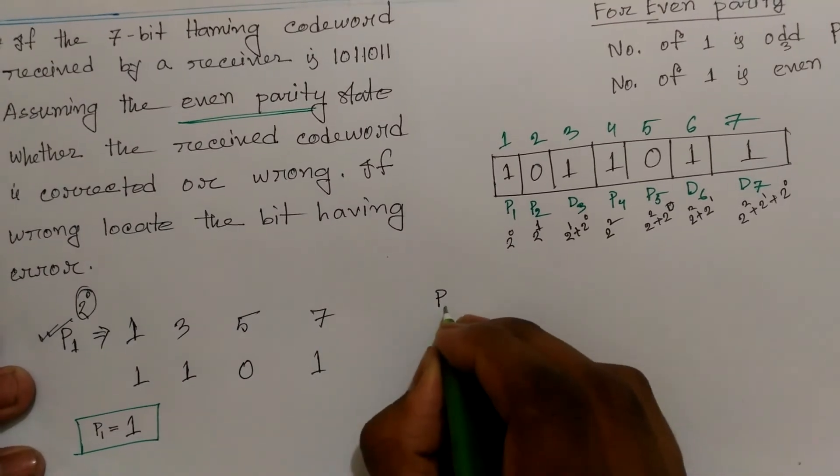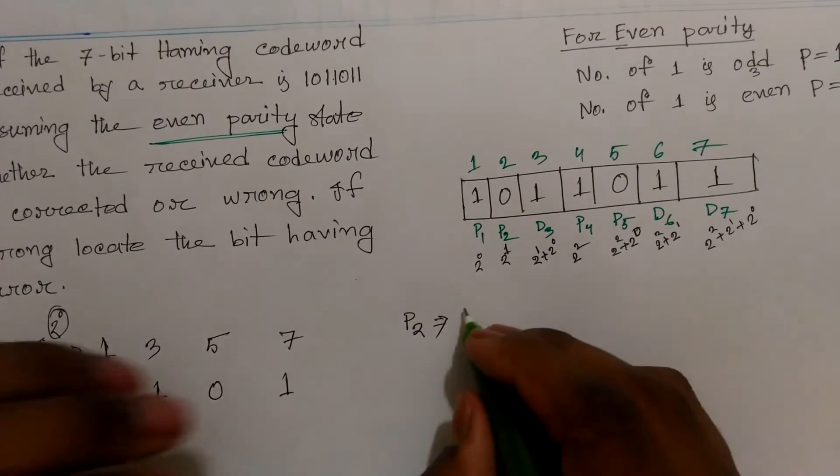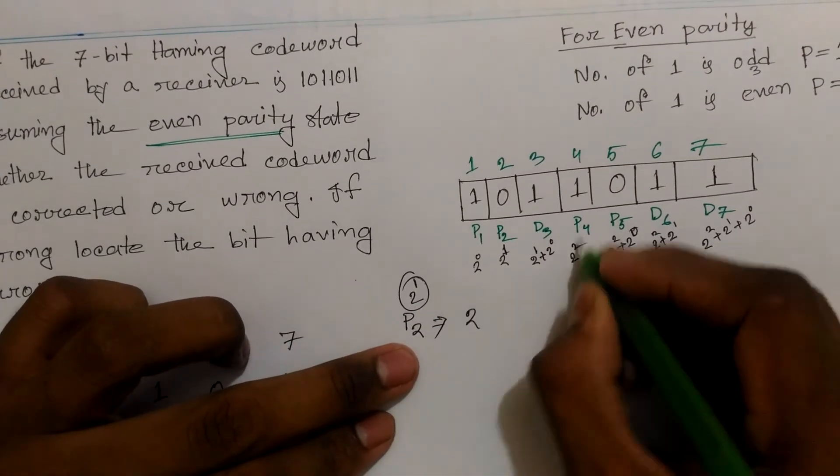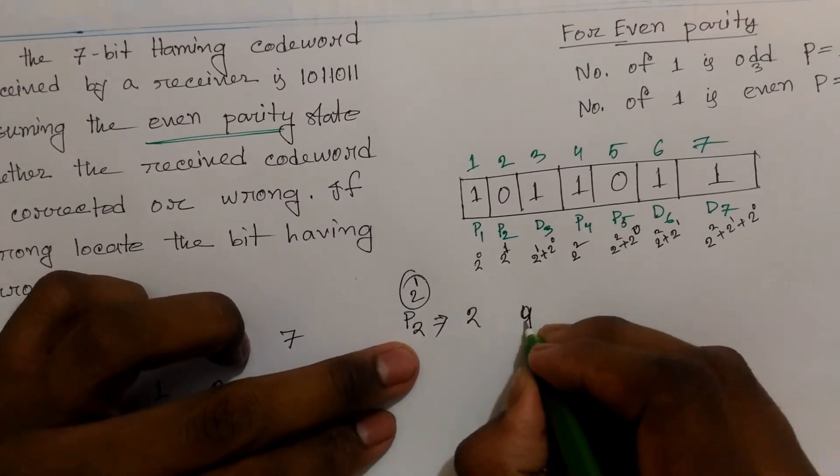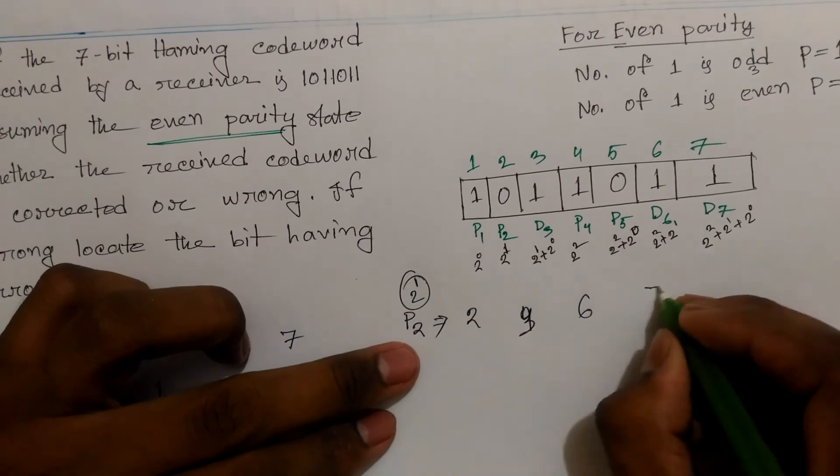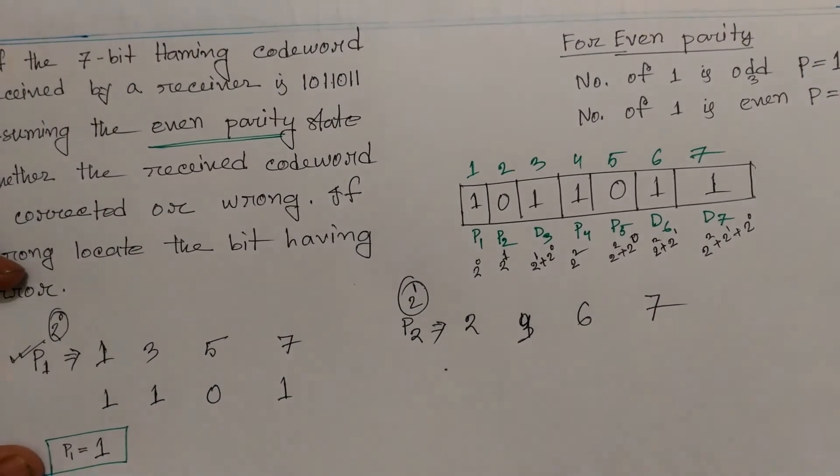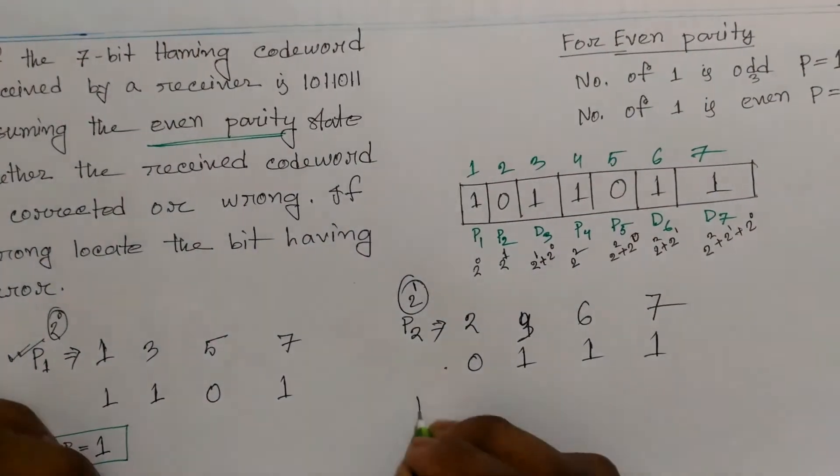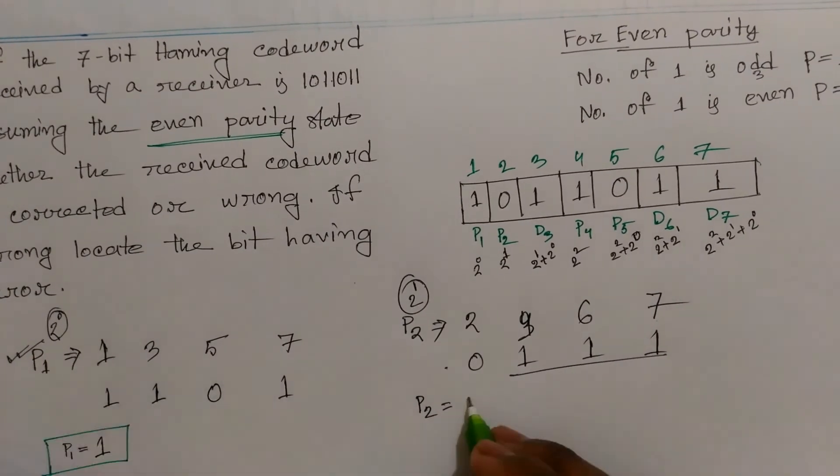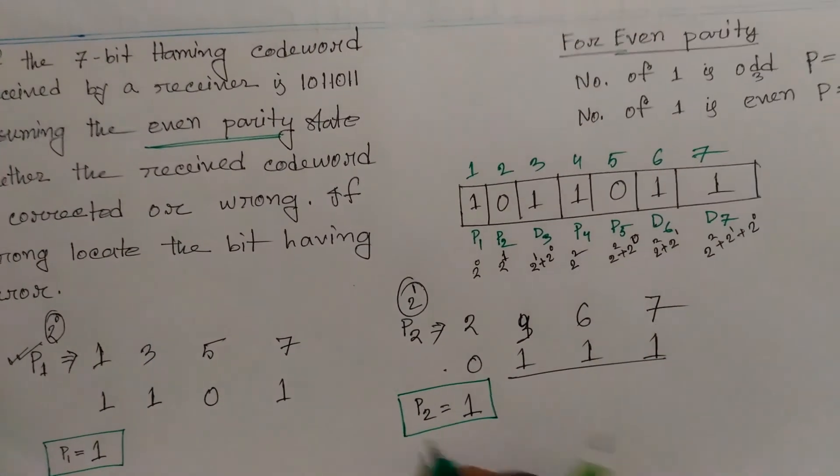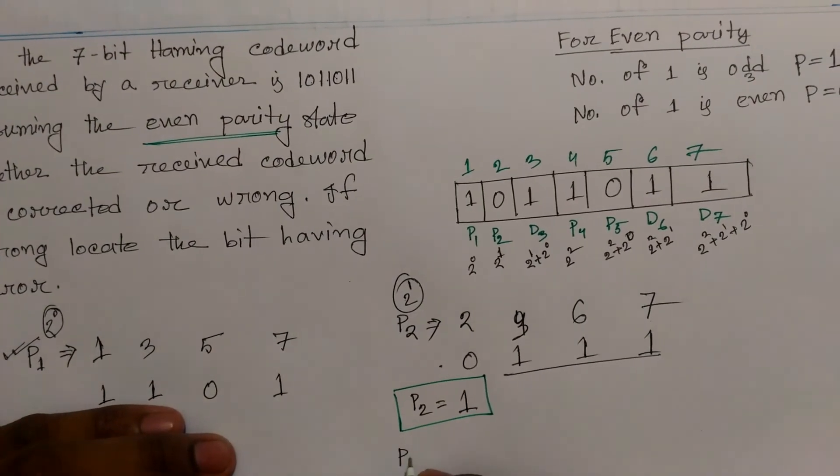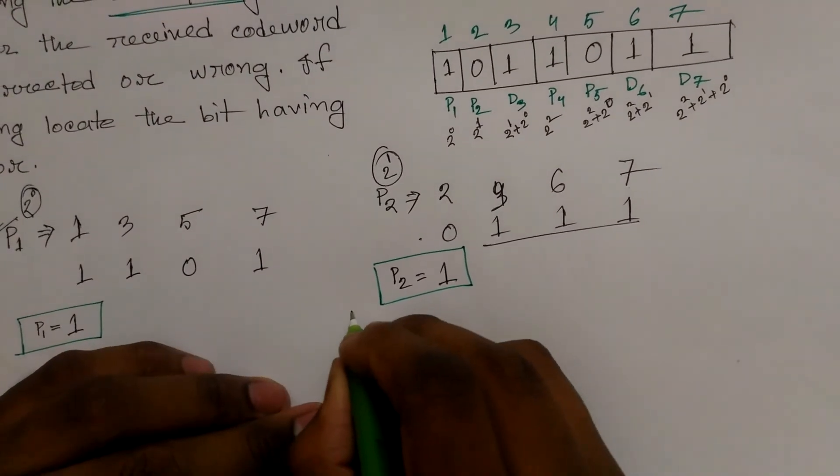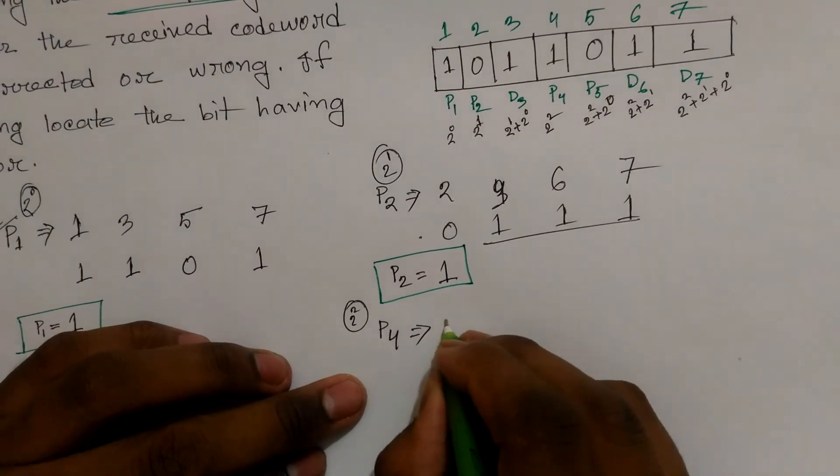Now for P2, which is at position 2. P2 equals 2^1. P2 checks positions 2, 3, 6, and 7. Position 2 has bit 0, position 3 has bit 1, position 6 has bit 1, and position 7 has bit 1. P2 equals 0 at position 2.